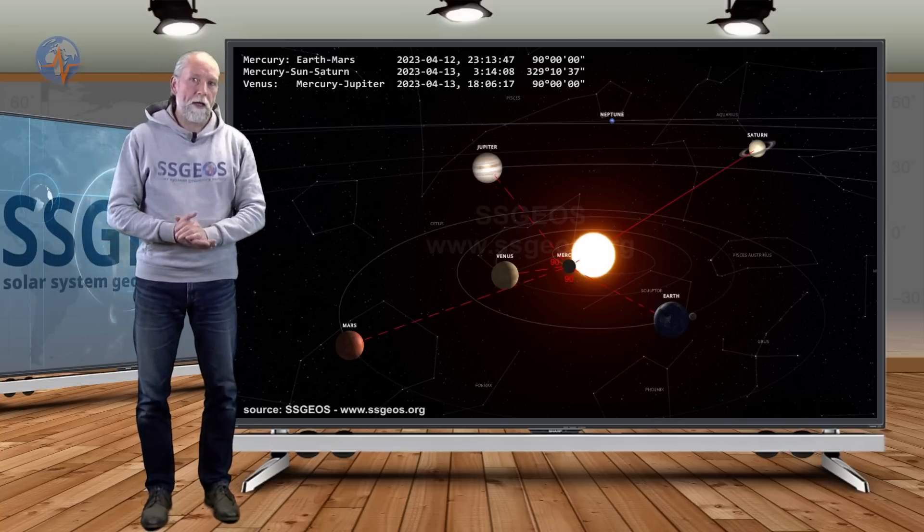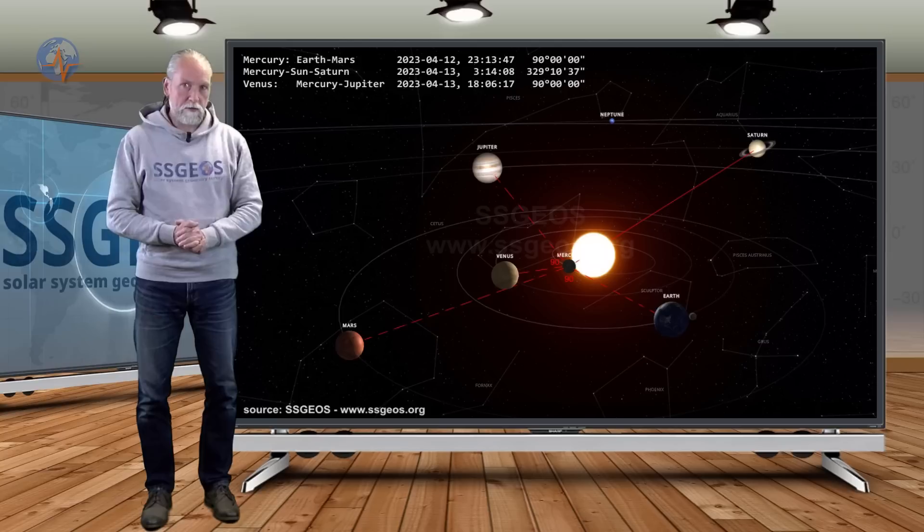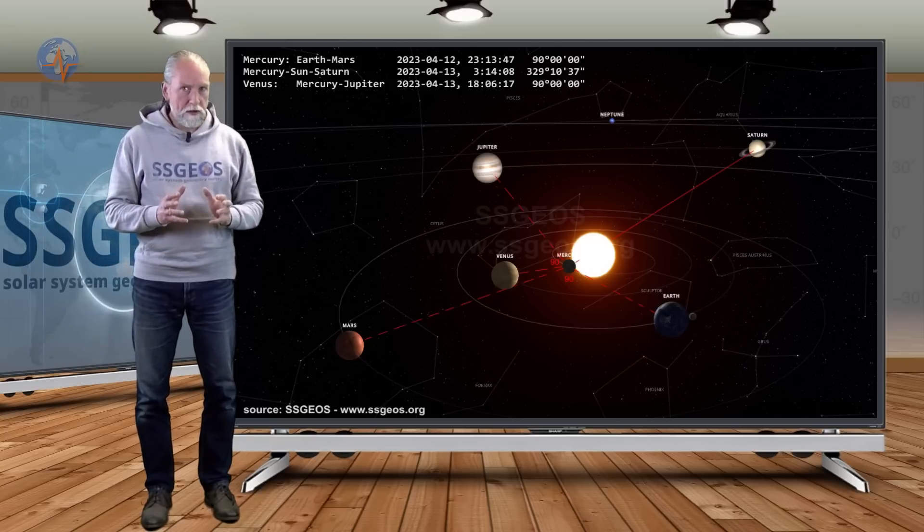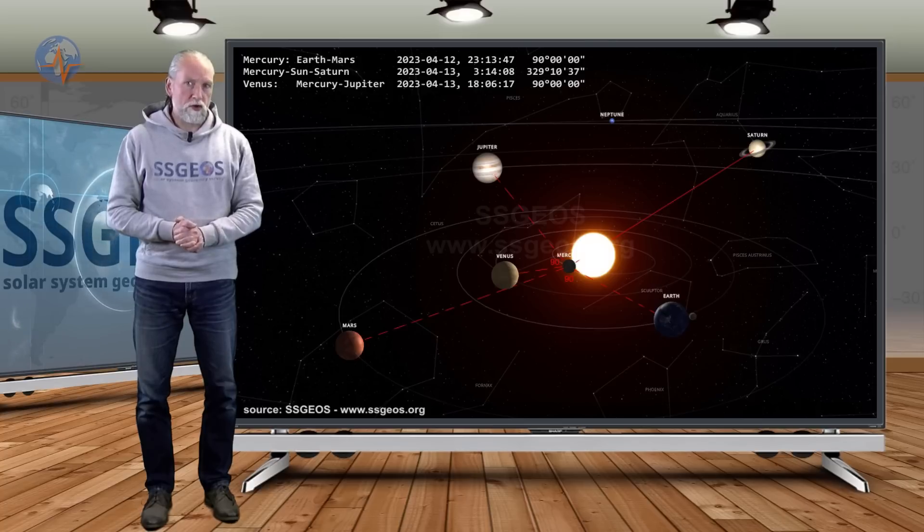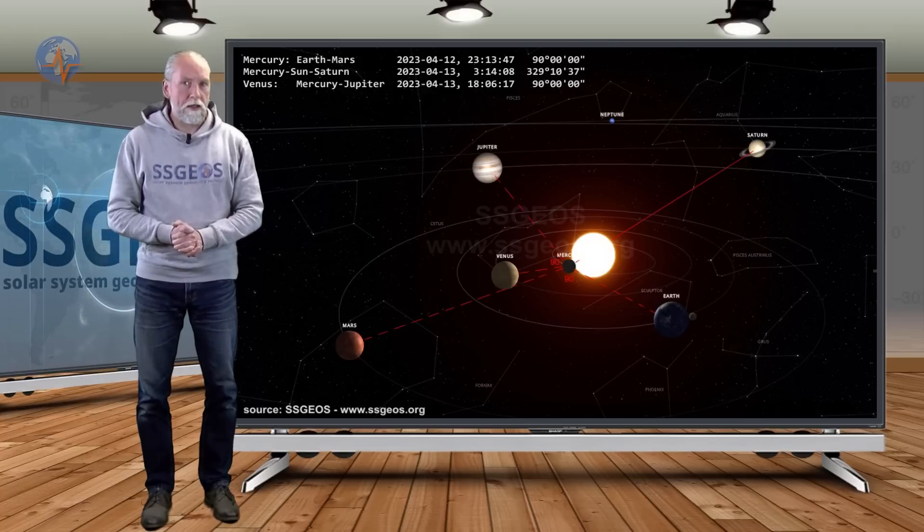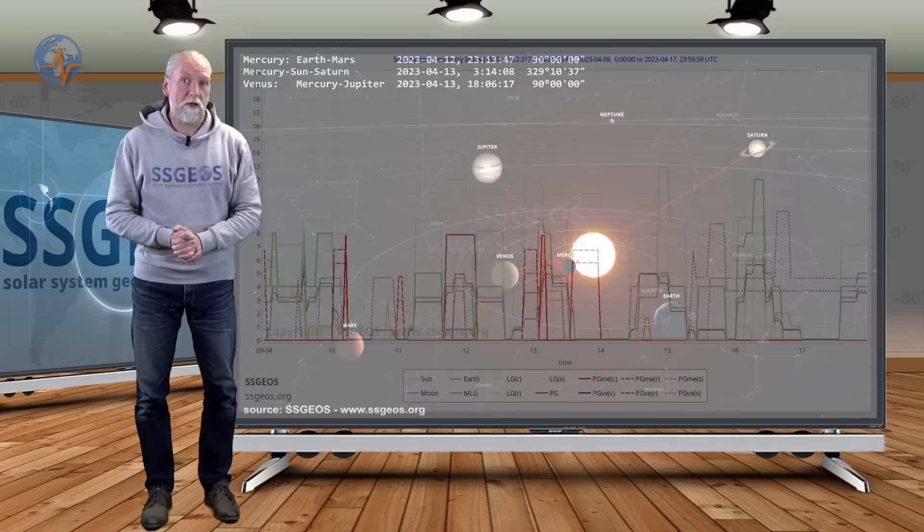So we have two 90-degree angles converging with a planetary conjunction, Mercury-Sun-Saturn, and this could really result in some stronger seismic activity. I could say borderline 6, but it could well reach mid to higher 6 magnitude.